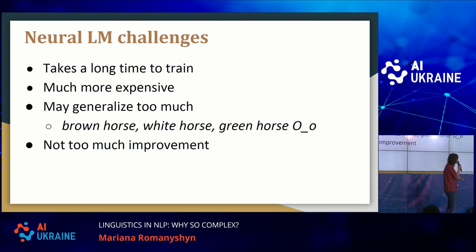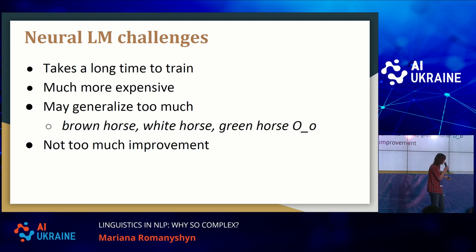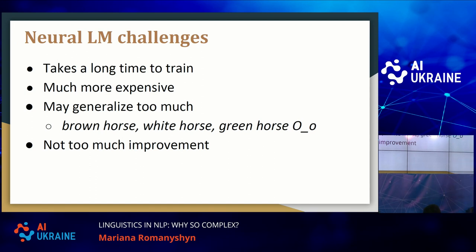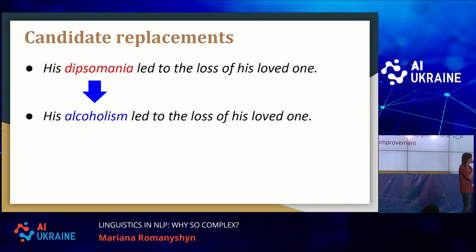There are also problems with neural language modeling. They take a lot of time to train and are much more expensive. Sometimes they may generalize too much — the byproduct of a neural language model is word embeddings, and with word embeddings we know that "brown," "white," and "green" would be very close in vector space. This means "green horse" will have a much higher probability than it does in real life. Although neural language models are state of the art, they have not shown too much improvement over statistical language models, and statistical language models are easier to retrain quickly if needed.